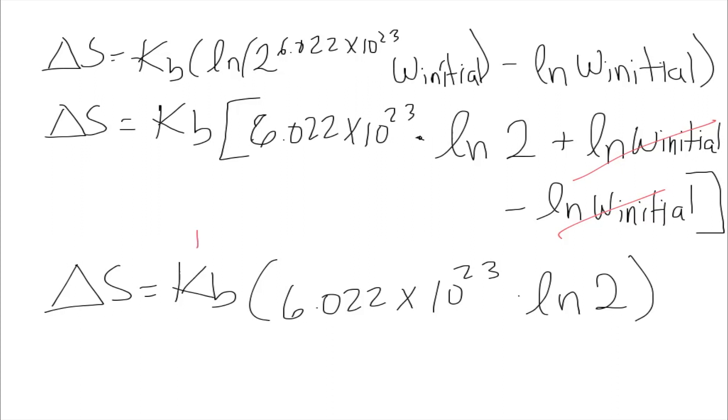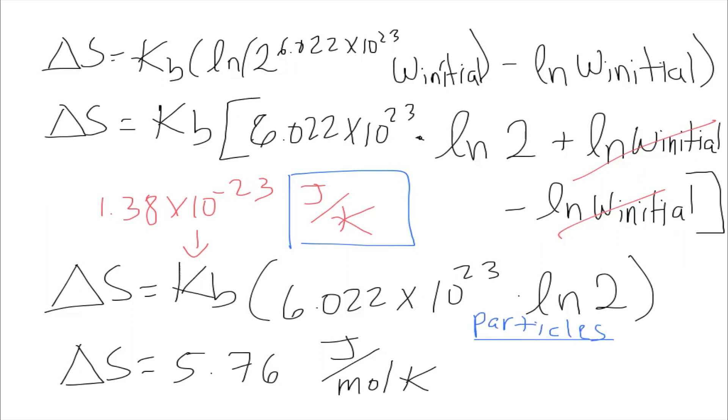This right here is 1.38 times 10 to the negative 23 joules over kelvin. And after multiplying all of this together, we'll get that delta S is going to be 5.76, and the units are joules per mol kelvin. How do we get those units? Well, we have joules over kelvin right here, and this right here is in particles per mol. So we can just neglect particles and just consider it one, so it will be joule over mol kelvin.